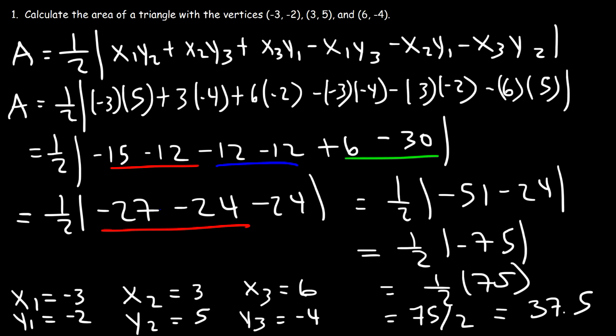So the area of this particular triangle is 37.5 square units. That's how you can calculate the area of a triangle if you're given the three vertices. That concludes this lesson.